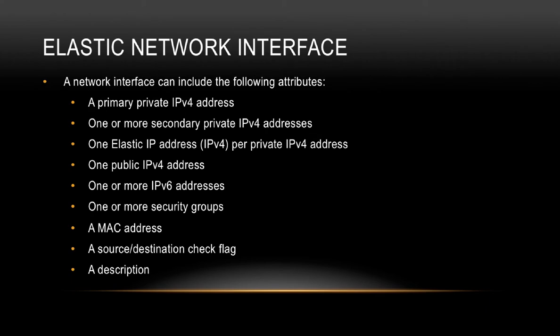A network interface, also known as an elastic network interface, has the following attributes: a primary private IPv4 address, one or more secondary private IPv4 addresses, one elastic IP address per private IPv4 address, one public IPv4 address, one or more IPv6 addresses, one or more security groups, a MAC address, a source and destination check flag, and optionally a description.